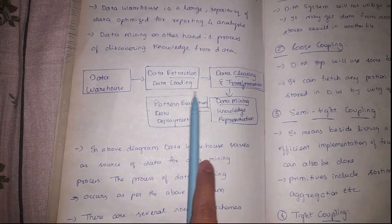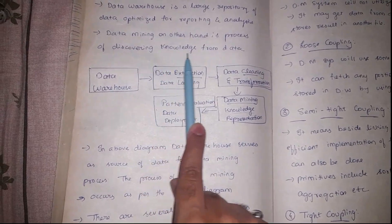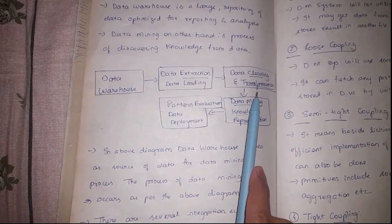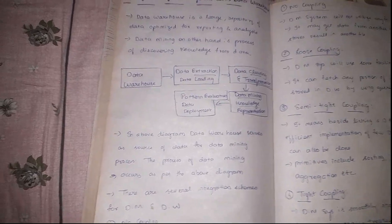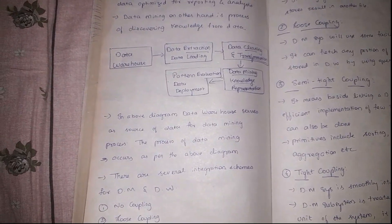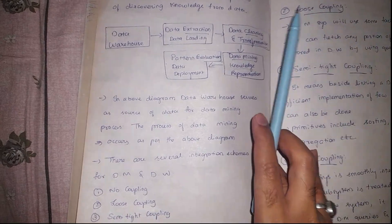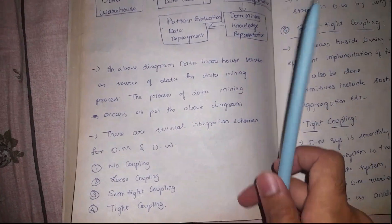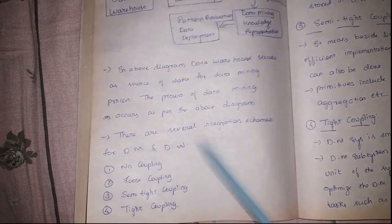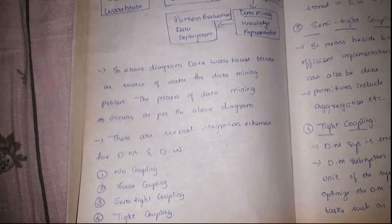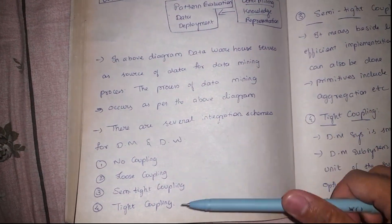In the previous video we discussed data mining task primitives — the basic tasks a data mining system will perform. Now we talk about the integration of data mining and data warehouse and how they will actually be implemented. We have four schemes for integrating the data mining system and data warehouse: no coupling, loose coupling, semi-tight coupling, and tight coupling.